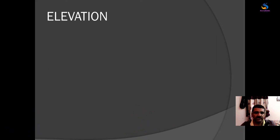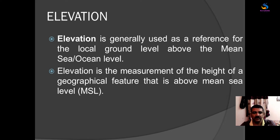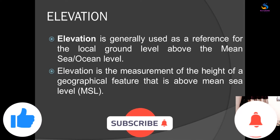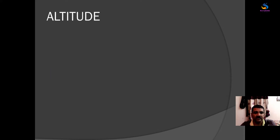Now, elevation is generally used as a reference for the local ground level above mean sea or ocean level. In other words, elevation is the measurement of the height of a geographical feature above mean sea level. For example, the measurement of the distance between mean sea level and the top of a hill is called elevation.